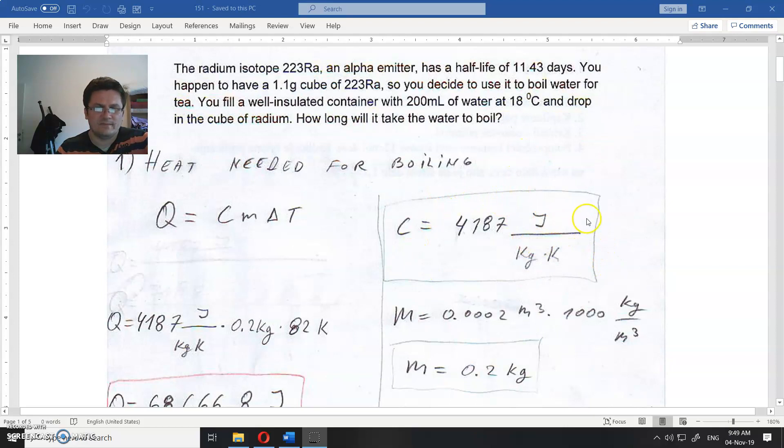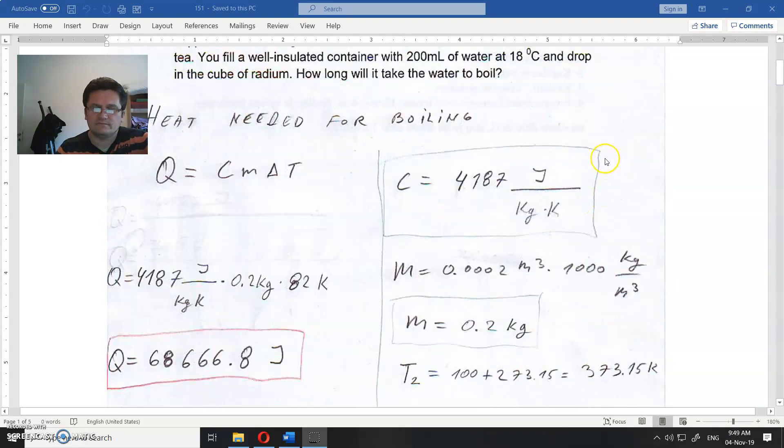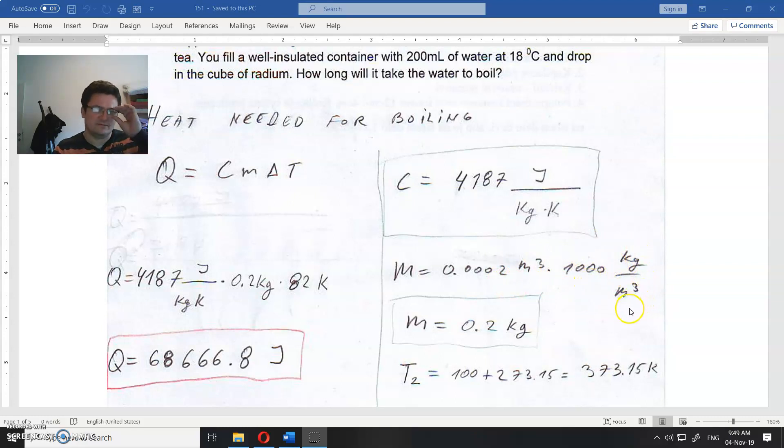What is the mass? 200 milliliters equals 0.0002 cubic meters. We multiply that by 1000 kilograms per cubic meter, which is the density of water, and we get 200 grams or 0.2 kilograms. That's one glass of water.